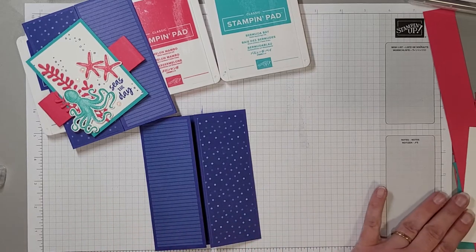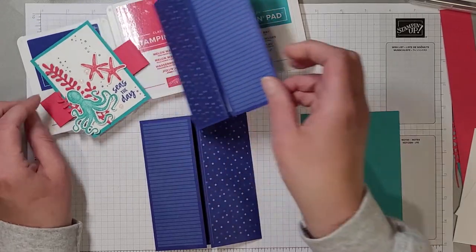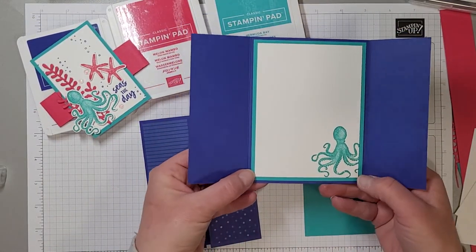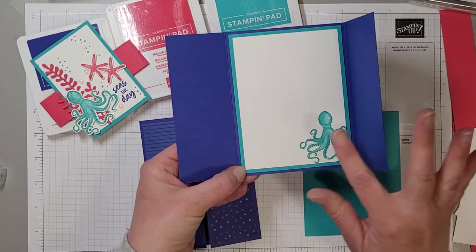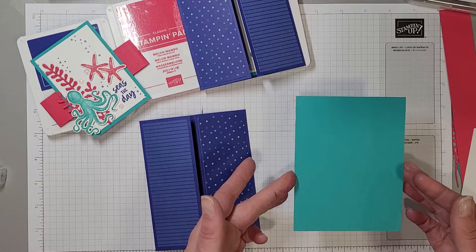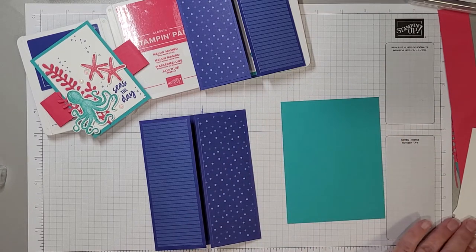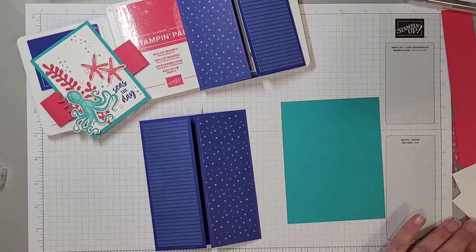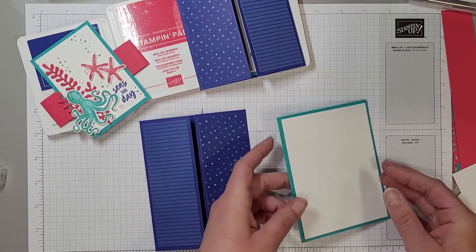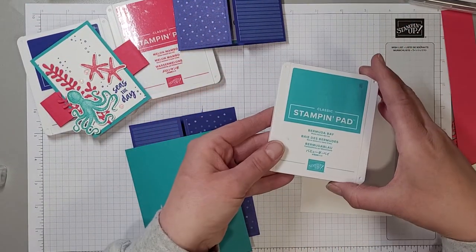So I'm going to make the inside of the card. As you saw, the inside of this card had two layers. It had a Bermuda Bay background mat and then it had the basic white with the stamped octopus. So the measurements for that are four by five and a quarter for the Bermuda Bay and three and three quarters by five for the basic white.